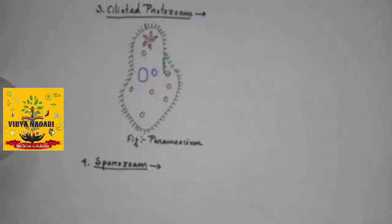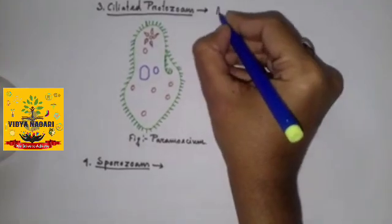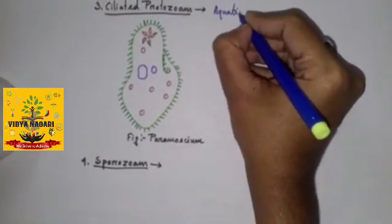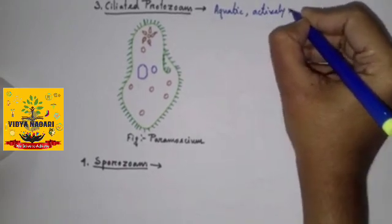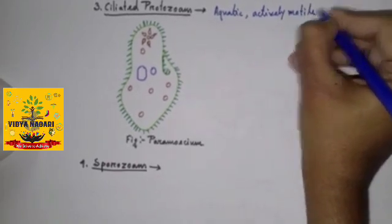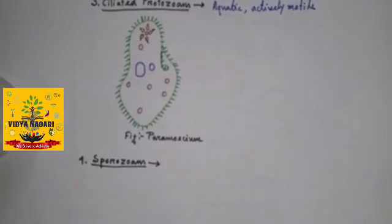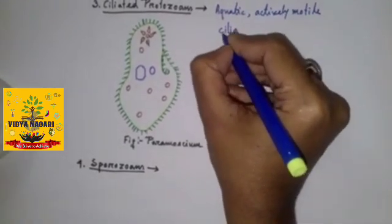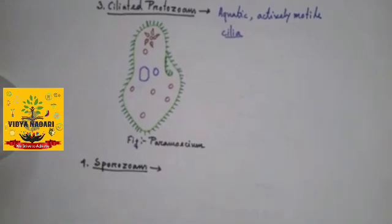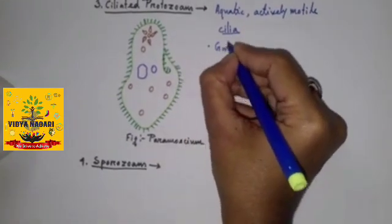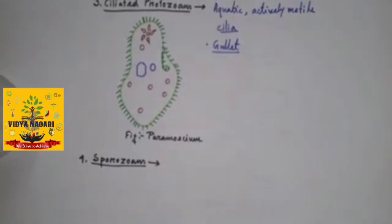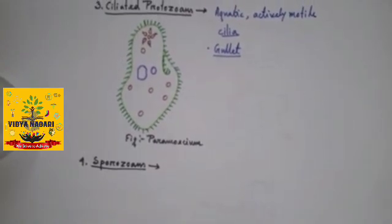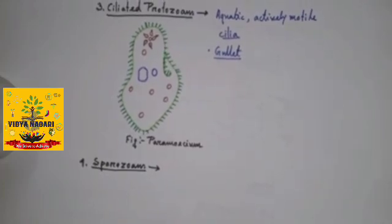The ciliated protozoans are aquatic and actively motile because of the presence of thousands of cilia. They have a cavity called gullet that opens to the outside of the cell surface. The coordinated movement of rows of cilia causes the water and food to be entered into the gullet.